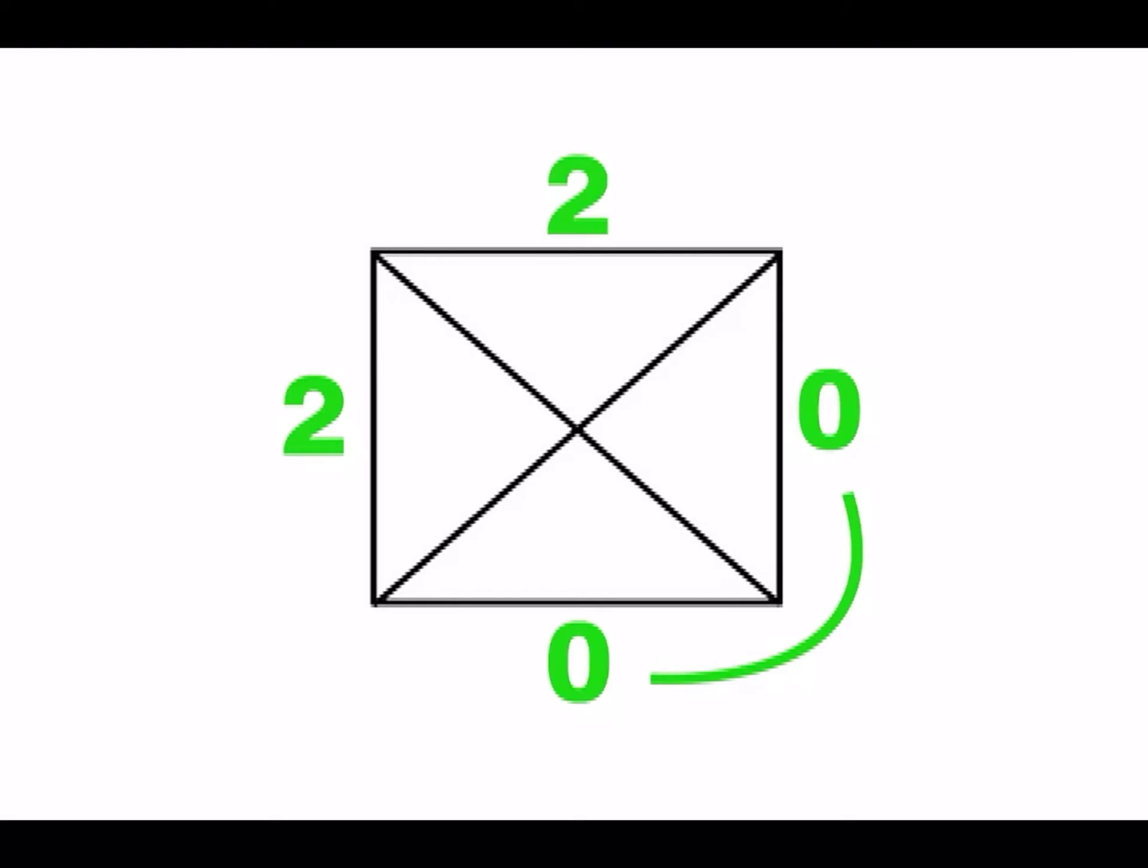On the second measure, play the note two green on the first beat. Then on the second beat, play the note two green again. On the third and fourth beats, play the note zero.